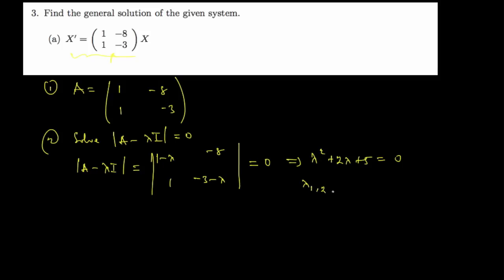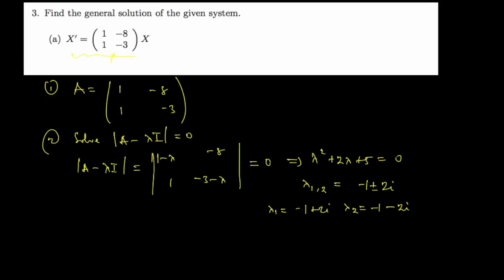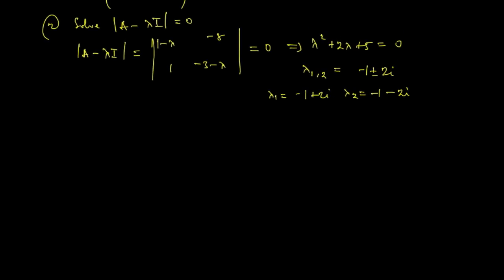And when we solve this, we're going to obtain lambda 1 and lambda 2 to be equal to negative 1 plus or minus 2i. In other words, our lambda 1 equals negative 1 plus 2i and our lambda 2 equals negative 1 minus 2i. Now this is quite odd. We have a complex eigenvalue instead of all the real eigenvalues we've obtained. So this is a quite different question. Now how do you handle such a question like this?